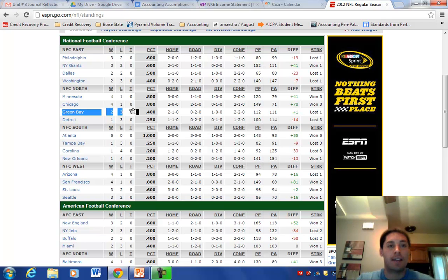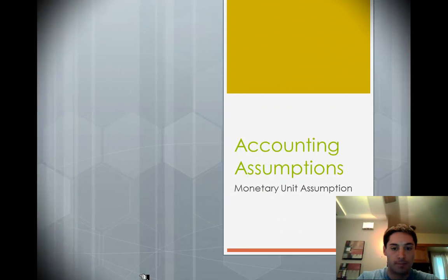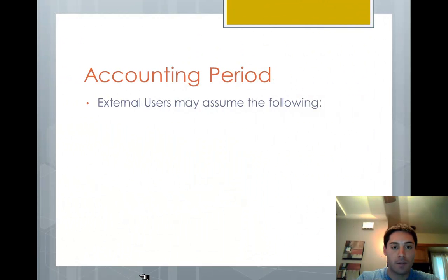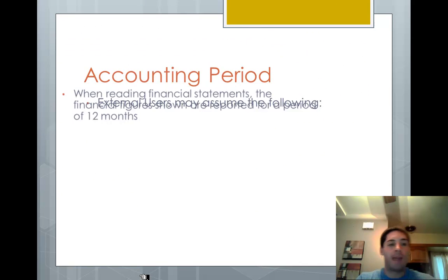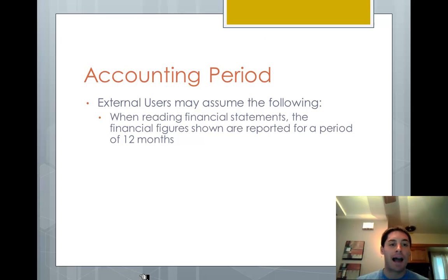This ties into the next assumption we're going to take a look at, which is called accounting period. The whole purpose of these assumptions is that external users — investors, governments, customers, unions — can rely on the financial information that they read on a financial statement.